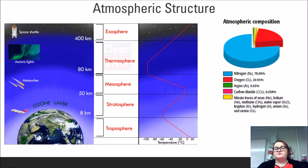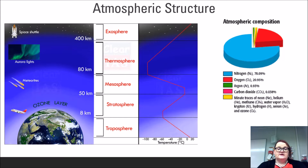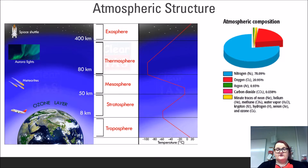Each layer of the atmosphere serves a particular function, and they are connected together through a pattern of temperature shifts. In the troposphere, as altitude increases, temperature decreases until it reaches the tropopause — the boundary between the stratosphere and the troposphere — where temperature stabilizes before increasing once again. The stratosphere houses the ozone layer, which provides some temperature inflation. Temperature will increase until it meets the stratopause. Then the pattern repeats through the mesosphere, and throughout the thermosphere and exosphere, temperature continues to increase with altitude until it meets open space.